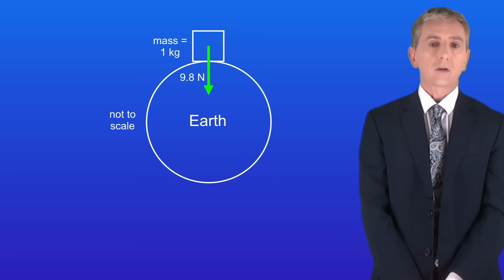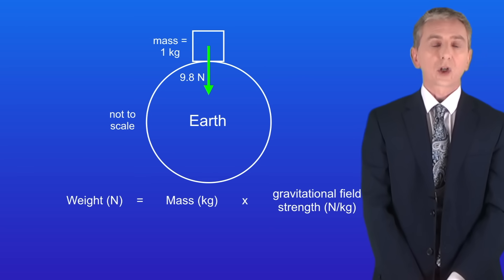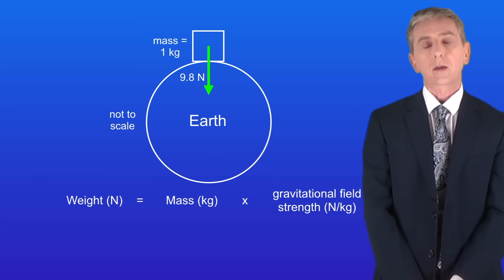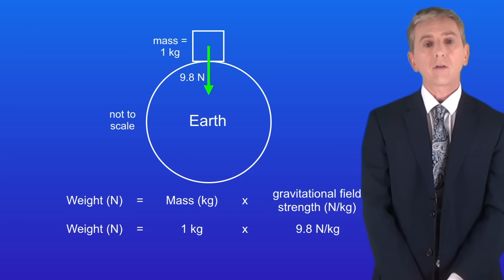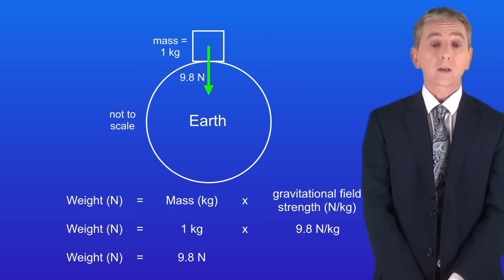So going back to our 1 kilogram mass we can now calculate its weight. The weight is the mass multiplied by the gravitational field strength. In this case the mass is 1 kilogram and the gravitational field strength for the surface of the earth is 9.8 newtons per kilogram. Multiplying these together gives us a weight of 9.8 newtons.